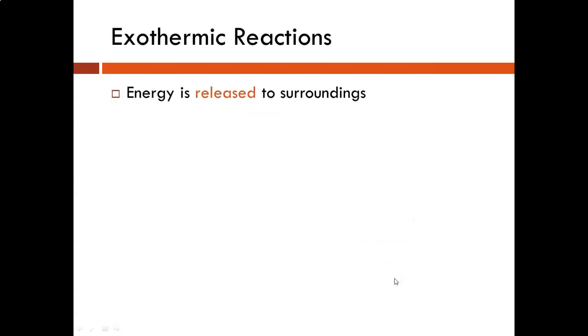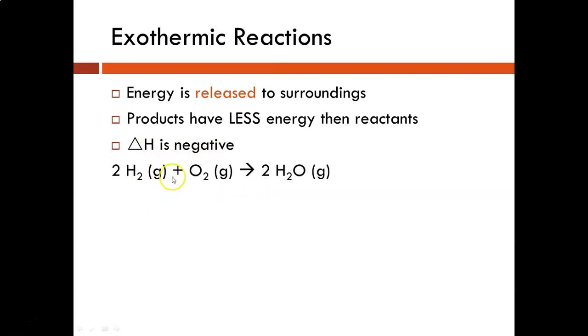In an exothermic reaction, energy is released from the surroundings. Energy is flowing from the system to the surroundings. The products have less energy than the reactants. Therefore delta H is negative. For this reaction, the combination reaction of hydrogen combined with oxygen, or we could look at it as the combustion of hydrogen to produce water, delta H is a negative number. Delta H is negative 483.6 kilojoules, and that would be kilojoules per mole.